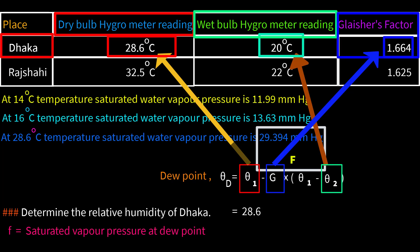The Glacier's factor G equals 1.664. So dew point of Dhaka equals 28.6 minus 1.664 times (28.6 minus 20), which equals 28.6 minus 1.664 times 8.6. Therefore, the dew point temperature of Dhaka equals 14.29 degrees Celsius.